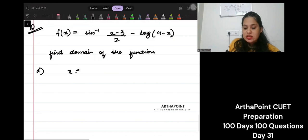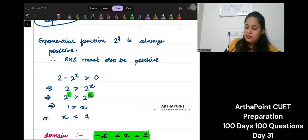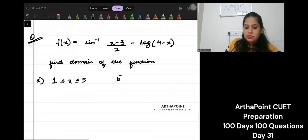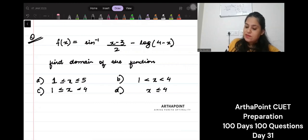Write down options. A, x is between 1 and 5. B, x is between 1 and 4. C, x is between 1 and 4, 1 included. And D, x is between 4 and 1.